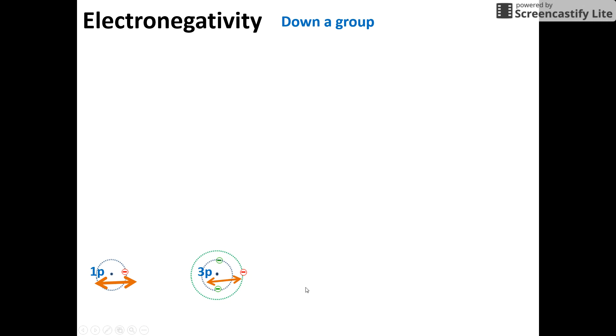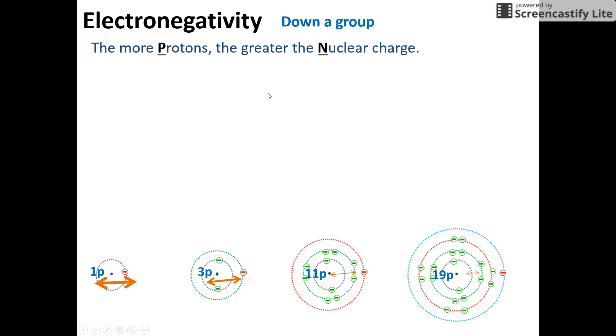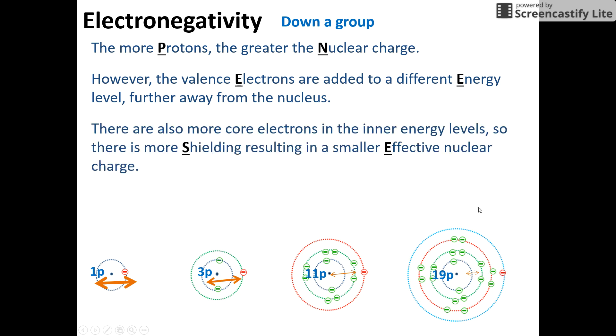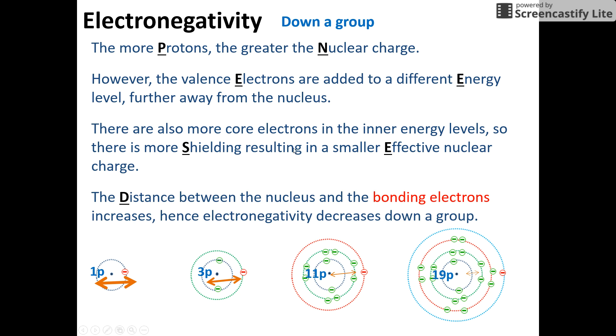And down a group, hydrogen, lithium, sodium, potassium. We see the same thing as what we saw in the previous one. More protons, more nuclear charge. Valence electrons being further away from the nucleus, so there's a smaller attraction. And remember, the valence electrons that bond and therefore that attraction to the bonding electrons will decrease because not only are they further away, so that's the distance, but also you've got more inner electrons causing repulsion and therefore shielding and therefore the effective nuclear charge is less.